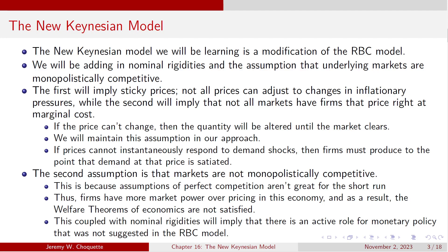If the price can't change — if you think of price and output space — if the price can't move, then the quantity has to move in order for the market to clear. Because if prices can't instantaneously respond to some kind of a demand shock, firms are going to have to produce up to the point that demand at that price is satisfied. So if you're selling widgets at $5 a unit and there's a huge demand shock and you can't change the price, it's still $5 a widget but you're not selling 10 anymore, you're selling 15.